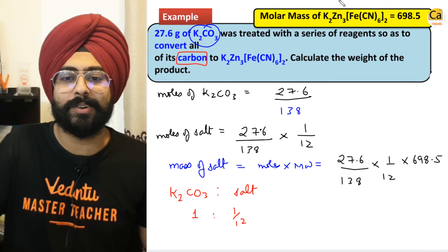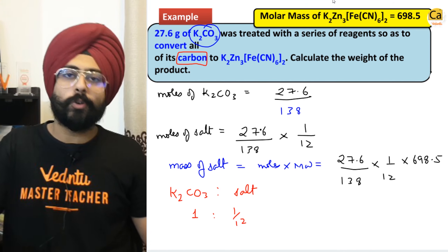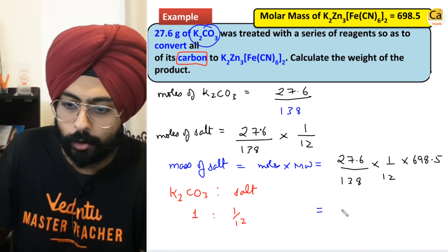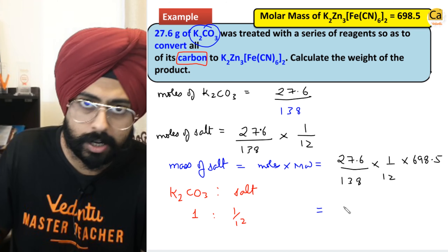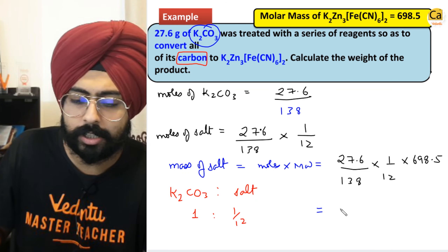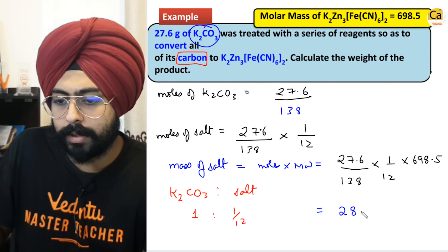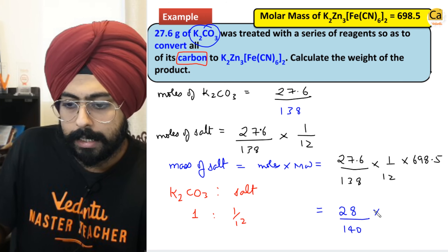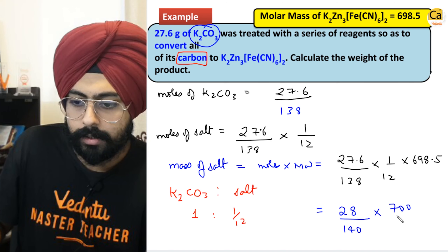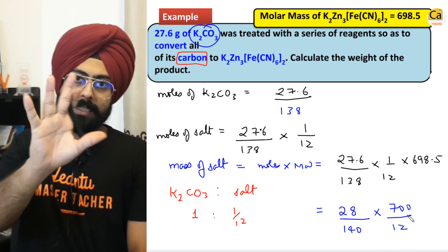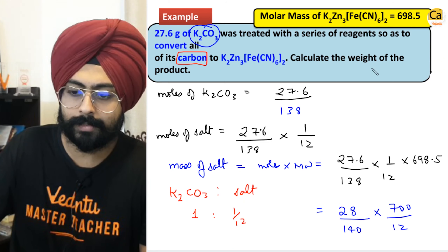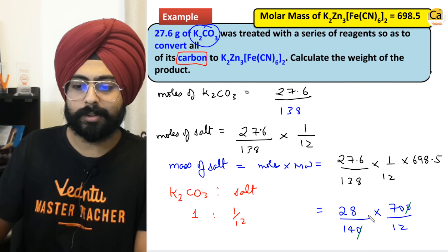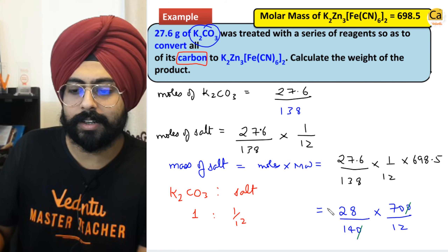I'll do an approximation: 28 ÷ 140 × 700 ÷ 12. There are multiple things divisible by 7, so this simplifies to 280/24 or roughly 140/12.